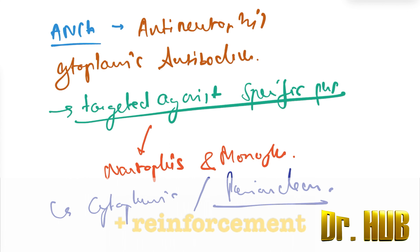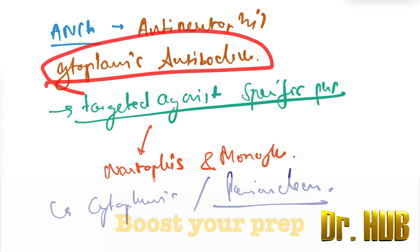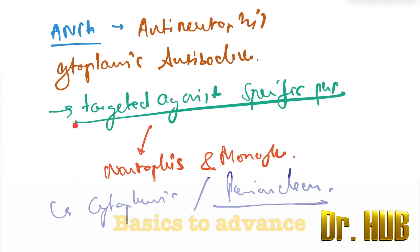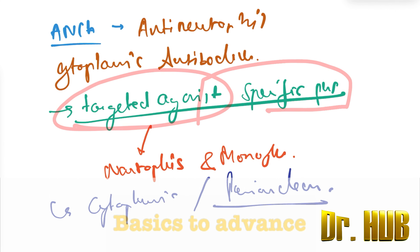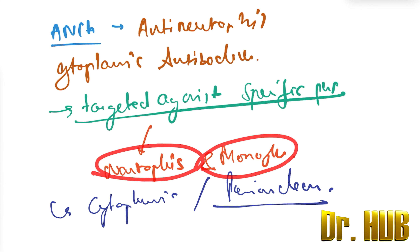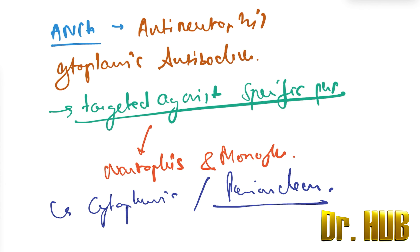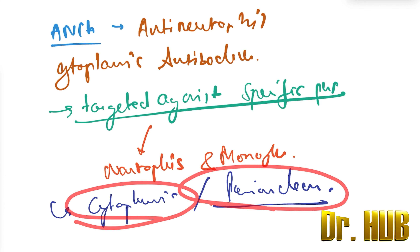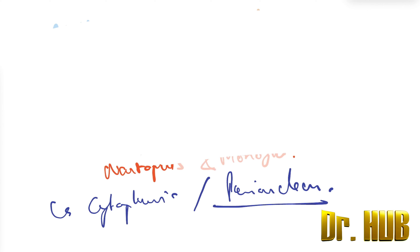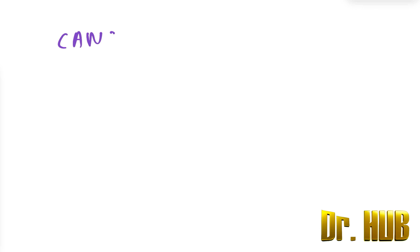To recap: ANCA stands for antineutrophil cytoplasmic antibodies — antibodies targeted against specific proteins in neutrophils and monocytes, classified as cytoplasmic (C-ANCA) and perinuclear (P-ANCA). Moving ahead, we will compare C-ANCA and P-ANCA in detail.